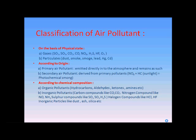Secondary air pollutants are those which are derived from primary pollutants. For example, oxides of nitrogen and hydrocarbons in the presence of sunlight form a pollutant called photochemical smog. Since it is derived from oxides of nitrogen and hydrocarbons, it is a secondary air pollutant.